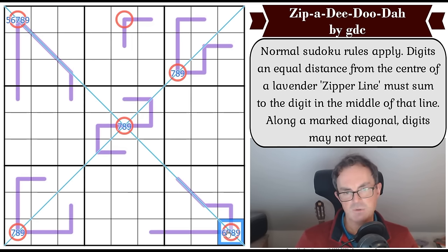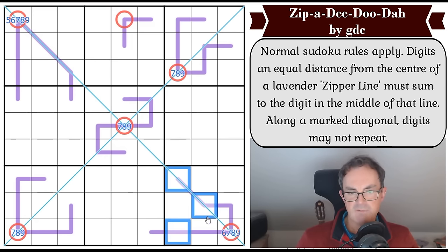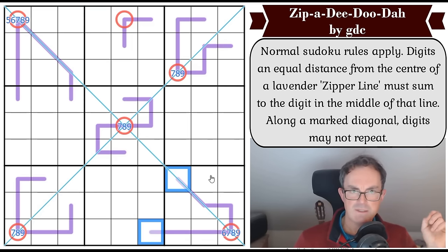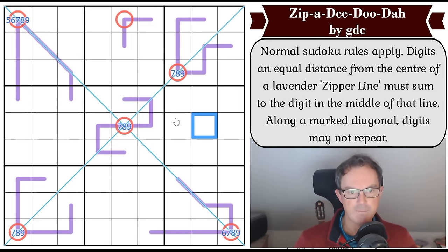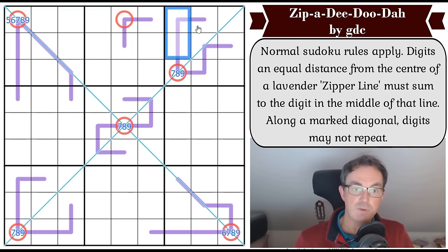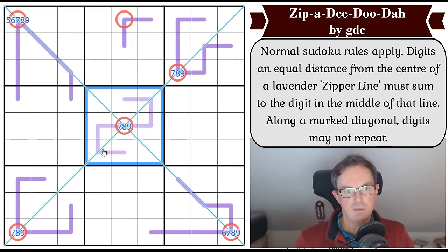That would have to be three, wouldn't it? If that's six, these would have to be one, two, three, four, and five. And we obviously couldn't have three opposite three within the box. There was another trick about zipper lines I remember from when I've done them before, which was that you can never put nine on the tail ends of zipper lines, because nine plus anything is going to break the middle of the line.